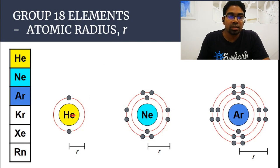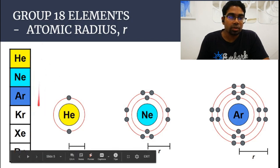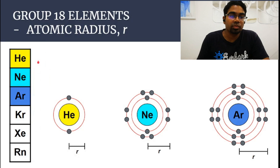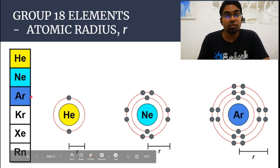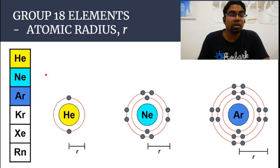As we go down the group, going from helium to neon to argon and so on, the period number is increasing from period 1 to period 2 to period 3. If you remember, the period number reflects the number of shells. Helium has 1 shell with 2 electrons.